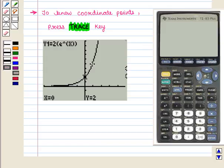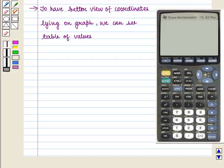we can scroll up and down the graph by pressing the left and right arrow keys on the calculator. To have a better view of coordinates lying on the graph, we can see the table of values.